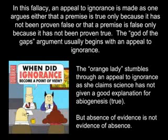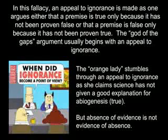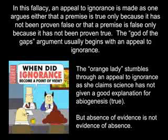Argument from Ignorance. In this fallacy, an appeal to ignorance is made as one argues either that a premise is true only because it has not yet been proven false, or that a premise is false only because it has not yet been proven true. The God of the Gaps argument usually begins with an appeal to ignorance. The Orange Lady stumbles through an appeal to ignorance as she claims science has not yet given a good explanation for abiogenesis — which is true — but absence of evidence is not evidence of absence.